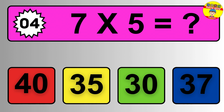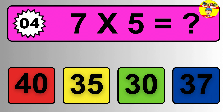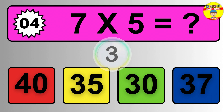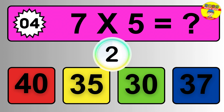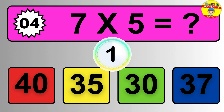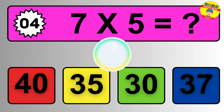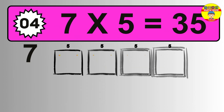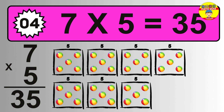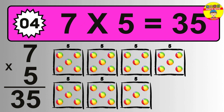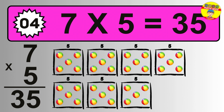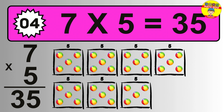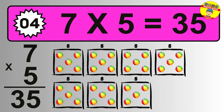Question four: seven times five equals what? The answer is seven times five is thirty-five. To calculate, we have seven groups with five balls each. So how many balls do we have? Thirty-five balls.